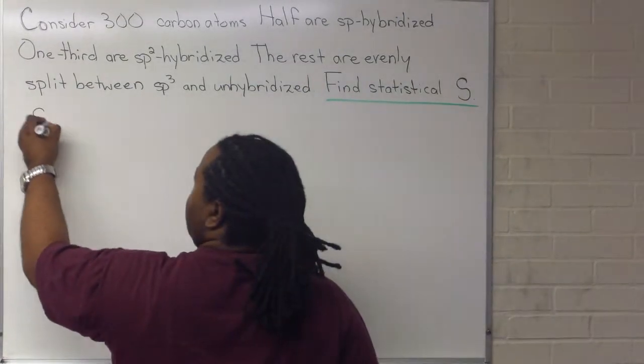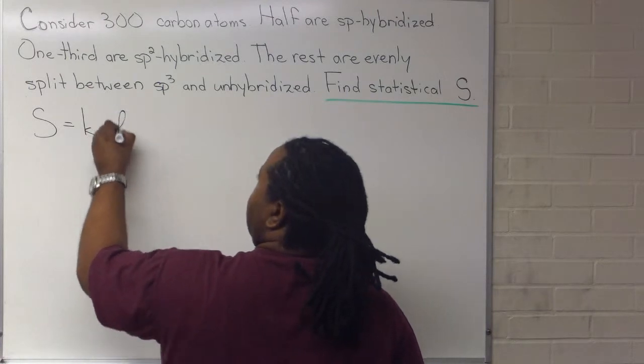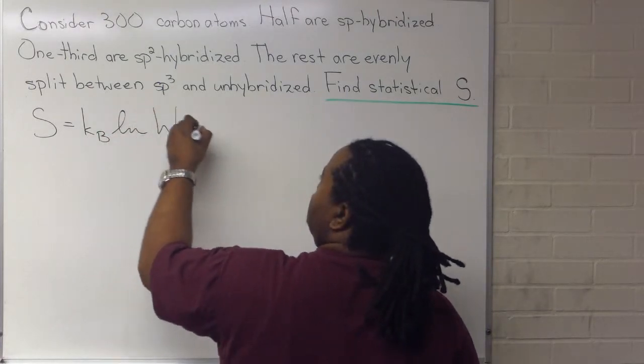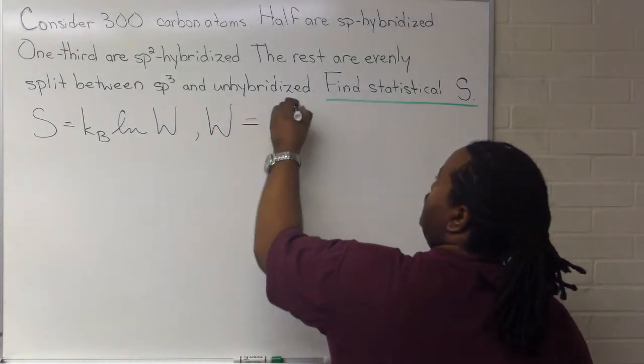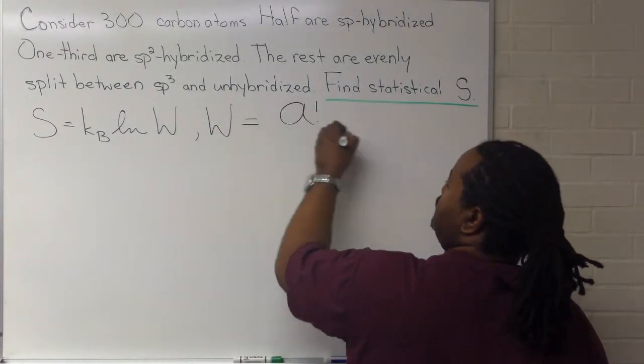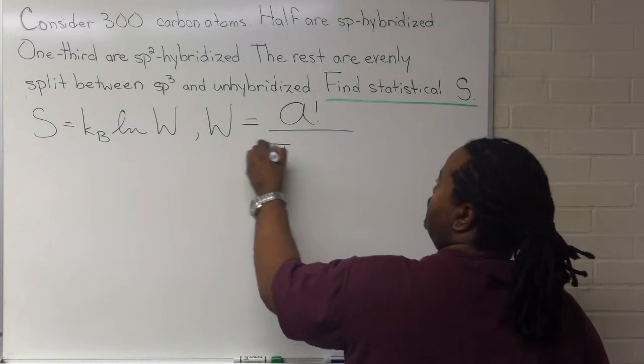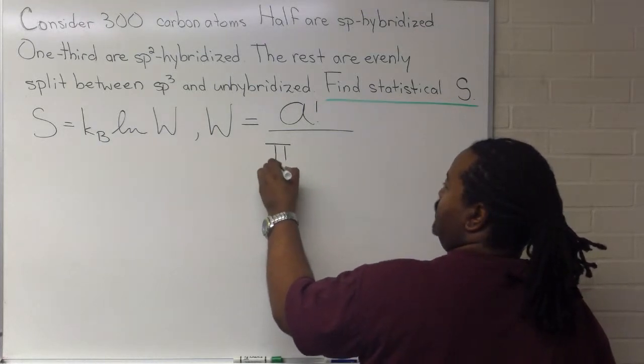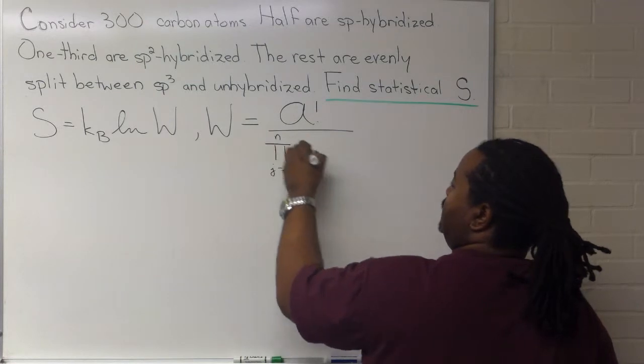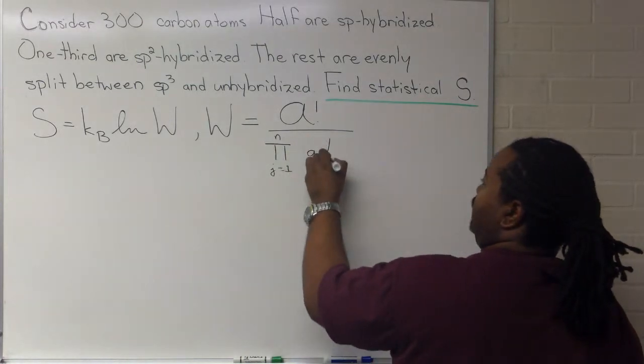This is S equals K LNW, where W is this expression: script A factorial over the product J equals 1 to N, A sub J factorial.